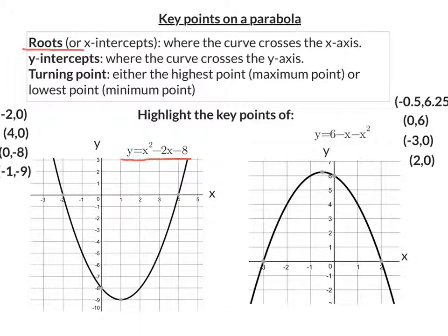So the first one we can look at the roots or the x-intercepts. That's where the curve crosses the x-axis. So here's the x-axis, the flat horizontal one, and it crosses these two points. And if we put their coordinates by it, that is negative 2, 0 and 4, 0 are the coordinates of the roots.